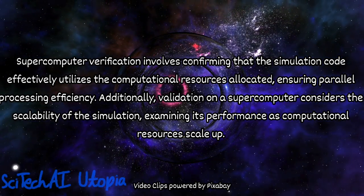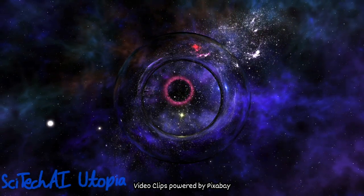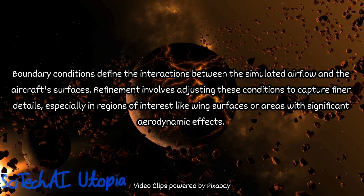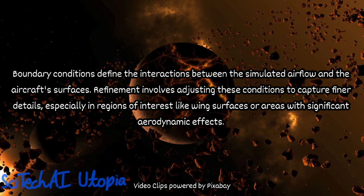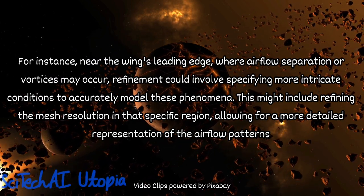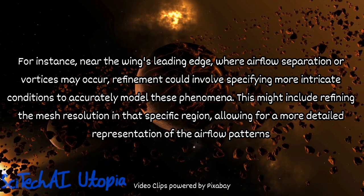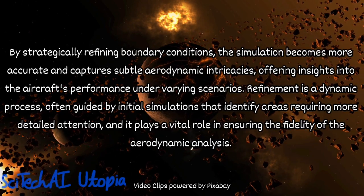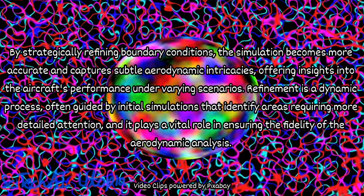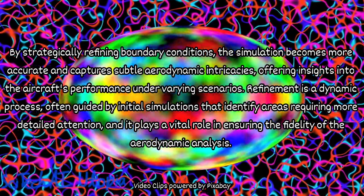Verification ensures that the simulation code correctly solves the discretized mathematical equations. Next is the iterative process. Based on validation and verification results, the model, numerical methods, or code may need refinement. This iterative process involves making adjustments to improve the accuracy and reliability of the simulation. Refinements could include modifying boundary conditions, fine-tuning numerical algorithms, or updating the model based on new scientific insights. For example, if the simulated airflow patterns differ significantly from experimental data during validation, researchers might refine the model by incorporating additional factors like turbulence effects or adjusting parameters to better match real-world conditions. Verification might involve running the simulation with simplified geometry for which analytical solutions are known, ensuring that the code produces the expected results.